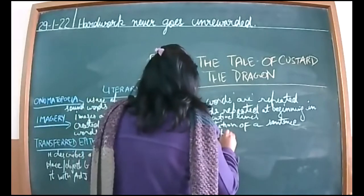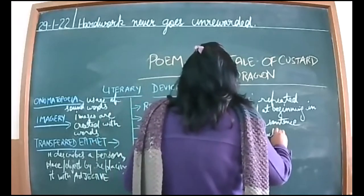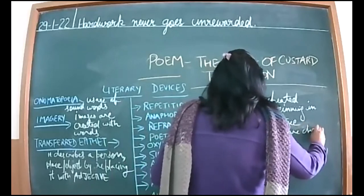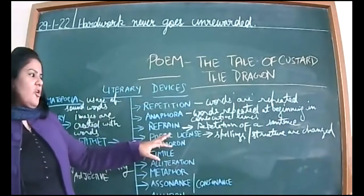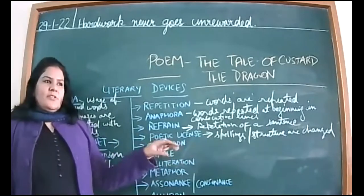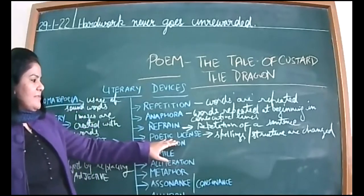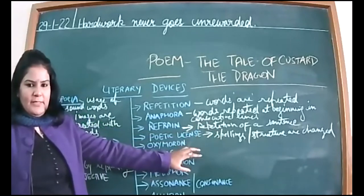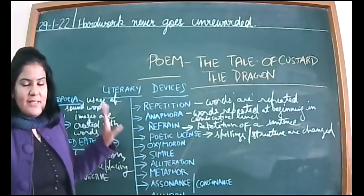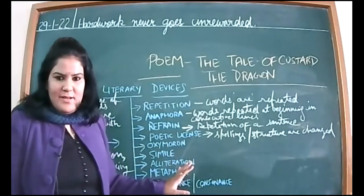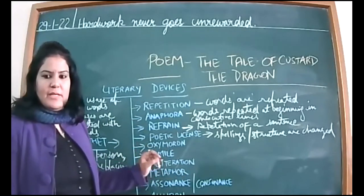When spellings or structure are changed by the poet to create some impact or musical effect, that is known as poetic license.